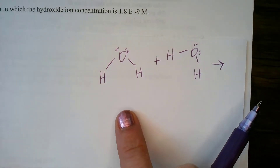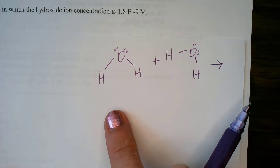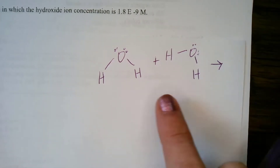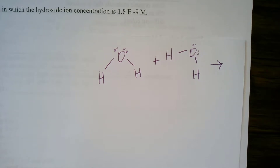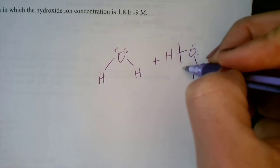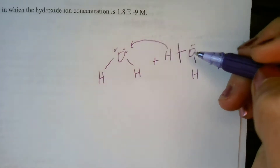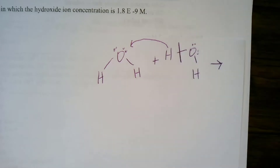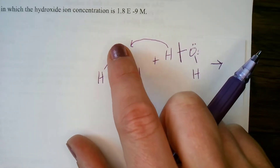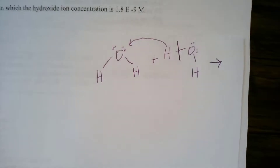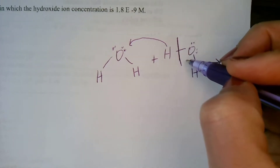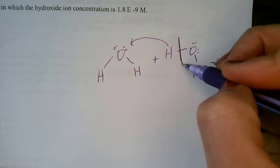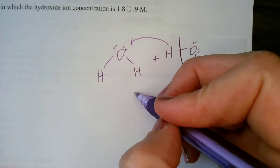Yesterday we talked about the auto ionization of water and the molecular geometry of a bent molecule of water. When it comes into contact with just the right orientation with another water molecule and the right kinetic energy, the bond breaks, releasing a proton. This hydrogen causes that bond to break, joining with the other water molecule and attaching to the electron domain of an oxygen.